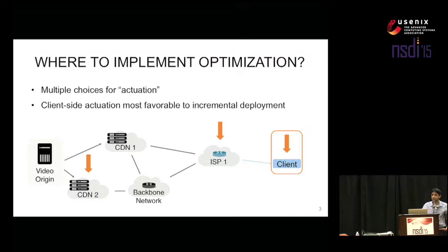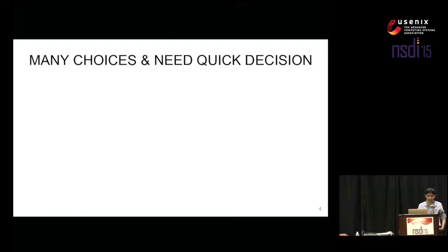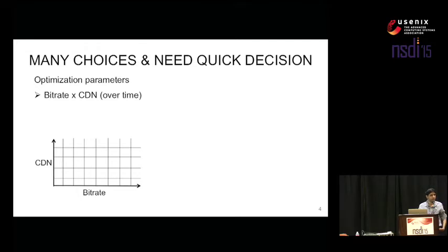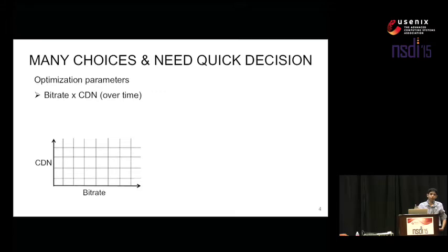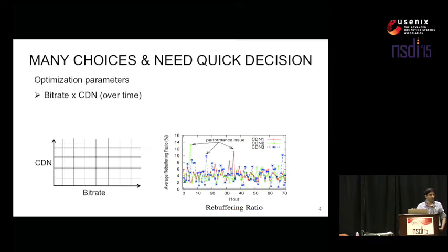The challenge in optimizing the client is that there are many choices in the optimization space, and because of the very nature of what we are optimizing, the decision has to be made very quickly. Two very specific optimization parameters are the bitrate used to stream the video and the CDN or delivery resource you can use. Bitrates can be anywhere from eight to ten and even more, and the CDN can be a small handful or a very large number at finer granularity. The performance of these resources continues to change over time, so the optimization must be done throughout the lifetime of the session.